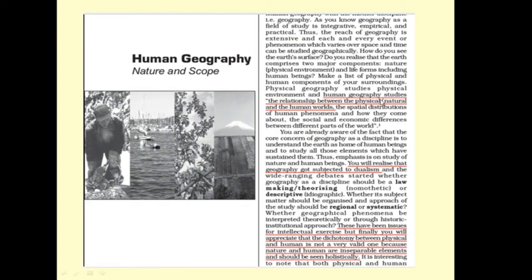Now read these underlined lines. This is the definition of human geography which I have already explained. Now come to these two underlined lines, where you will read that you will realize that geography got subjected to dualism. Here, dualism means two aspects for a single subject in geography. We read two aspects: one is environmental side and the other is social factors side.